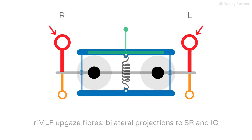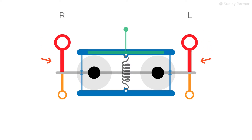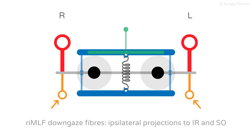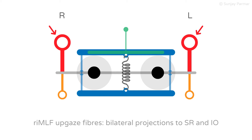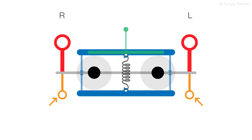The upgaze saccadic fibres innervate the superior rectus and inferior oblique subnuclei bilaterally. This is represented by the large red handle indicating bilateral innervation to the elevating eye muscle subnuclei. The downgaze saccadic fibres supply the inferior rectus and superior oblique subnuclei ipsilaterally, shown by the smaller orange handle indicating ipsilateral innervation to depressing eye muscle subnuclei. This means that each side's RIMLF gives bilateral input to quickly look up, but only ipsilateral input to quickly look down.